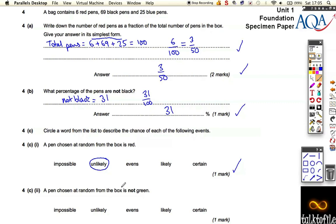And the pen chosen at random from the box is not green. Well, the probability of pulling a green pen is impossible because there aren't any green pens in there. So the probability of pulling a not green pen, any color apart from green, is 100% certain. Because we know we can't get a green, there aren't any greens in there. It's a nice little trick question there, trying to catch you out.